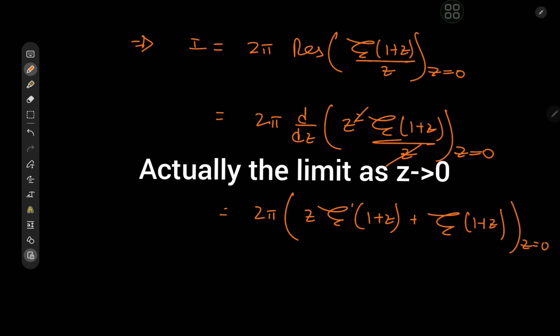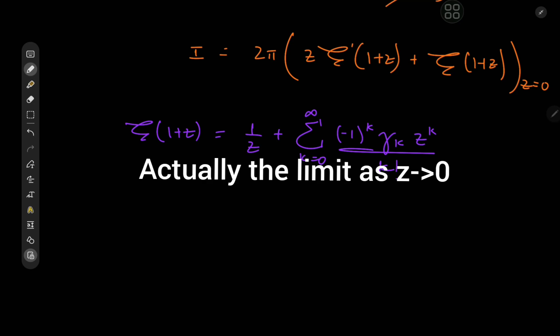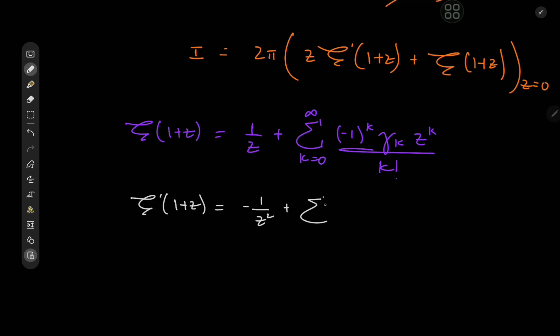And we're interested in the case of z being equal to 0. And to evaluate all this, again, we need the Laurent series for the ζ function, which comes in absolutely clutch in this context. Let me show you what I'm talking about. So we need ζ'·z. So we'll differentiate this to get ζ'. ζ'(1+z) = -1/z² + Σ(k=0 to ∞)(-1)^k γ_k k z^(k-1)/k! on differentiating divided by k factorial.